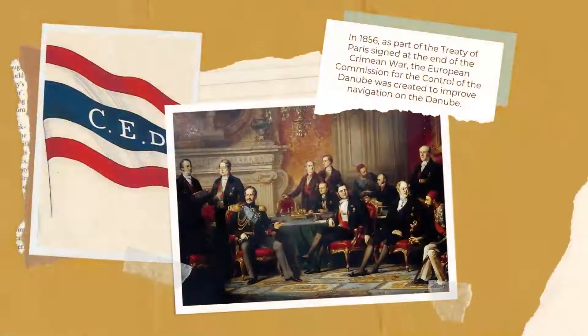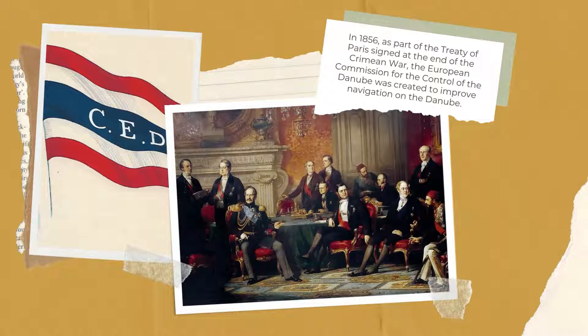In 1856, as part of the Treaty of Paris, signed at the end of the Crimean War, the European Commission for the Control of the Danube was created to improve navigation on the Danube.